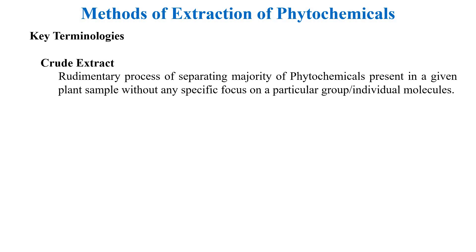Imagine you take ginger or turmeric and heat it up in a cup of water as you are making a tea or a decoction. The amount and type of phytochemicals dissolved in that will be hugely varied. This is called crude extraction — you are trying to extract as many possible chemicals from the plant material into the liquid medium. In traditional medicines, the liquid medium is commonly water.